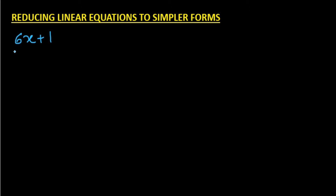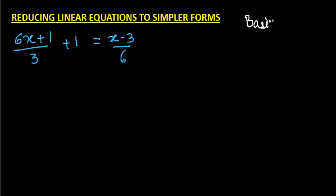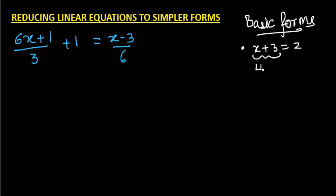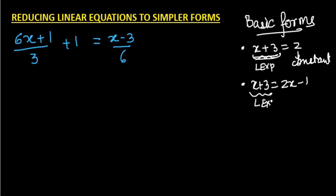Let us take an example: (6x + 1)/3 + 1 = (x − 3)/6. Let me quickly recap the two basic forms from the previous video. The first form has a linear expression on one side of the equality and a constant on the other side. The second form has a linear expression on both sides of the equality.